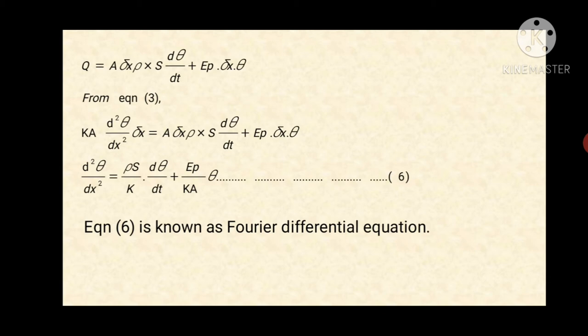From equation three we can write: KA·(d²θ/dx²)·Δx equals A·Δx·ρ·s·(dθ/dt) plus e·p·Δx·θ. After simplification we get equation six: d²θ/dx² equals (ρs/K)·(dθ/dt) plus (ep/KA)·θ. Equation six is called the Fourier differential equation.